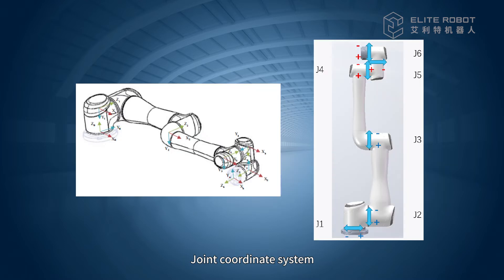The joint coordinate system is set in the robot's joints. In the joint coordinate system, the position and posture of the robot are determined based on the joint coordinate system of each joint base.